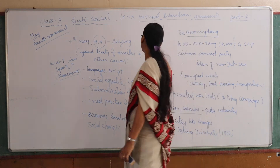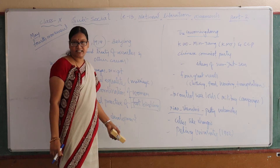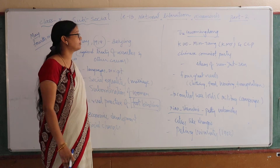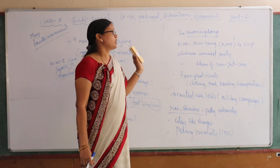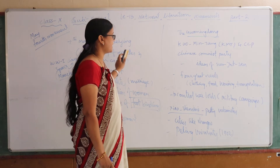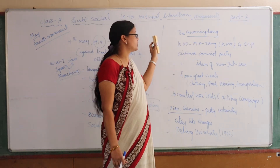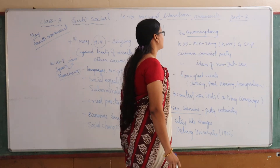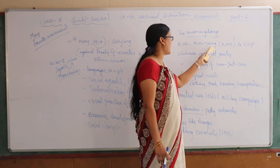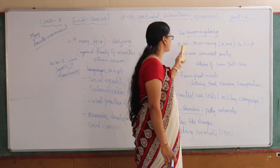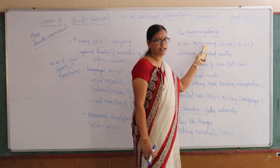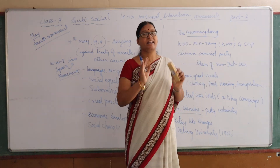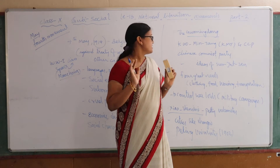After Sun Yat-sen, the government came into the hands of the warlords who were controlling it. After Sun Yat-sen, within the Chinese Republic Party and the Chinese Communist Party, a leader called Liu Mingdan — also known as Liu Mingtan — emerged. KMT (Liu Mingtan) and CCP (Chinese Communist Party) were the two major parties that emerged around 1911 in China.